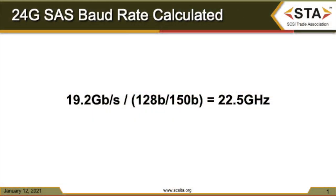Another change was the incorporation of forward error correction, which adds another 20 bits of overhead. So the resulting overhead is 128B/150B. To calculate the baud rate of 24 gig SAS, you start with the throughput of 19.2 gigabits per second and divide it by the overhead of 128B/150B. The resulting baud rate is 22.5 gigahertz.